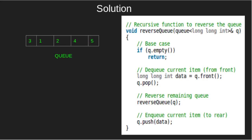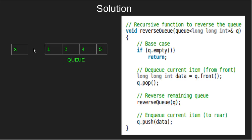Since we got the resultant reverse queue from the function, we enqueue 5 into that resultant and thus we got the reversed queue. Let's see its C++ implementation and understand it by taking an example. First of all, we'll check if the queue is empty or not. Here, the queue is not empty. Thus, we'll store the value of the front element in data, then pop the front element — that is, we'll pop 3. Now, we'll call the reverse function for the remaining queue.